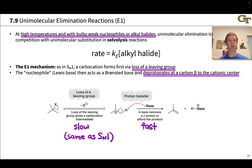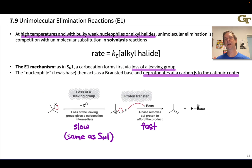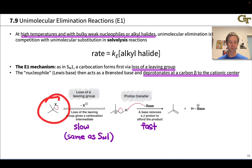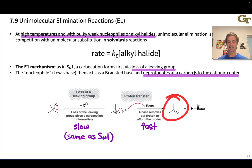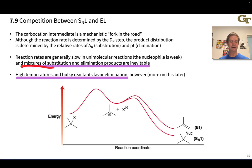We can favor elimination by taking advantage of the fact that this reaction is entropically favorable — more so than SN1. In an SN1 reaction, we go from some number of molecules on the reactant side to essentially the same number on the product side. But in an elimination reaction, we break the alkyl halide apart, going from two molecules — the alkyl halide and the base — to three product molecules: the alkene, the conjugate acid of the base, and X minus. This entropic advantage is why raising the temperature favors elimination over substitution.